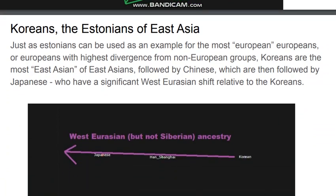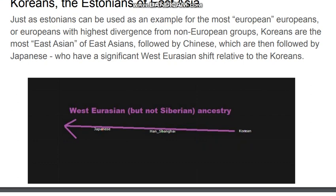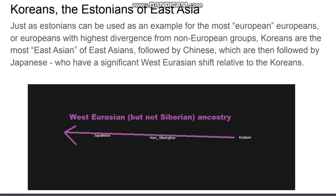Koreans are like the Estonians of East Asia. Just as Estonians exemplify the most European Europeans — those with the highest divergence from non-European groups — Koreans are the most East Asian of East Asians, followed by Chinese, and then Japanese, who have a significant West Eurasian shift relative to Koreans.